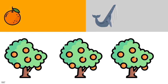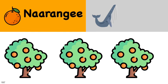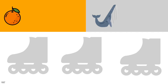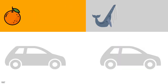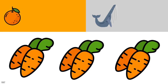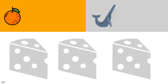And look at these orange trees. What's orange in Hindi? Narangi. And the gray roller skates. What was gray in Hindi? Saleti. And look at these bright suns. What's the color orange in Hindi? Saleti. Yummy carrots. What's orange in Hindi? Narangi. And look at these gray cheese blocks. What was gray in Hindi? Saleti.